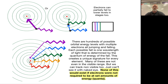Keep in mind, none of this would exist if electrons were not required to be at set amounts of energy. So the whole take-home message of this entire video is: electrons have to be at set amounts of energy. They can move between amounts, but they can't go anywhere they want to. And how do we know this? They make these wonderful bright-line spectrums for us to see when we energize them.